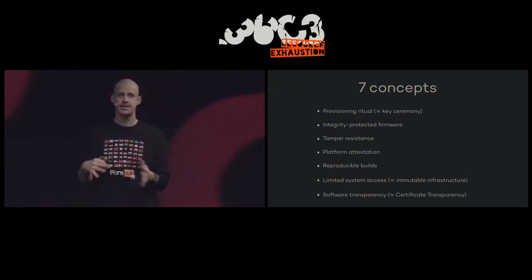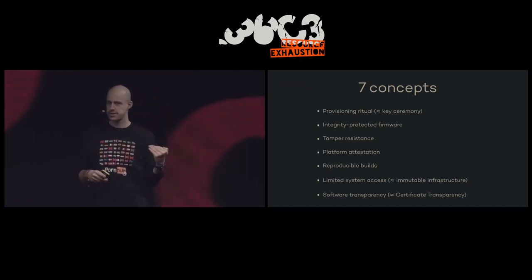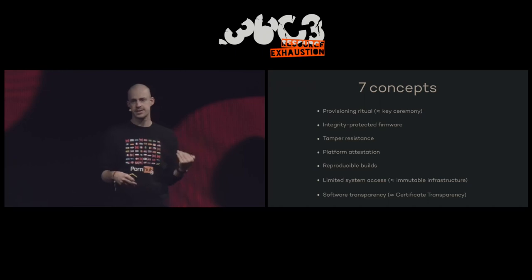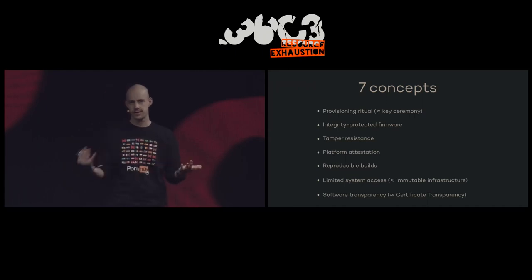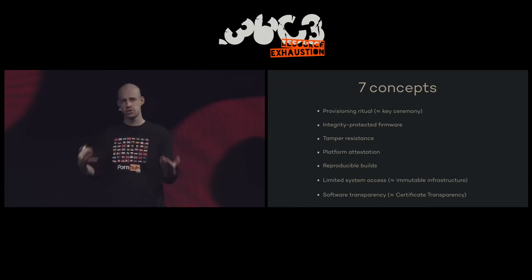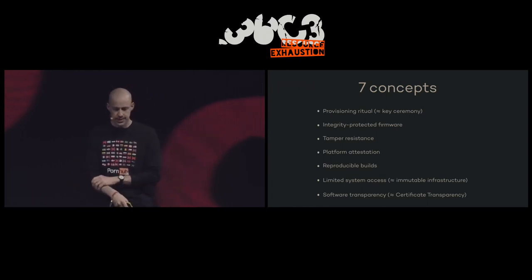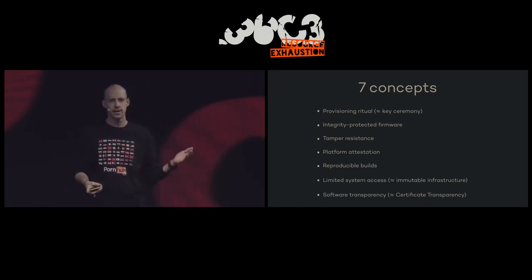Then we need to limit the system access, because even if we have integrity-protected firmware and we know everything that has been executed as part of the boot, we can still have a malicious administrator logging into the system and changing things in ways we can't control. So we need to limit system access — we need some kind of immutable infrastructure. Lastly, we need a transparency log for all the software running on a particular server, so we can monitor not only the current but also the past actions of platform owners and audit them. This is like the certificate transparency mechanisms we have with PKI.